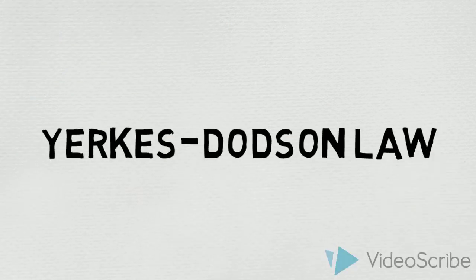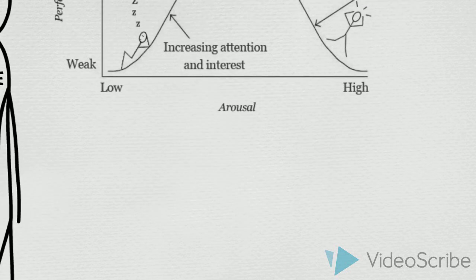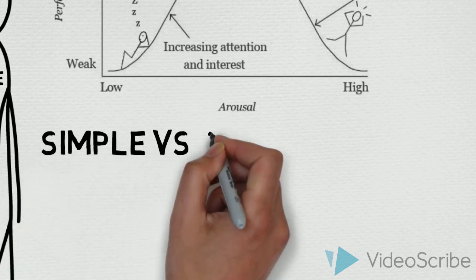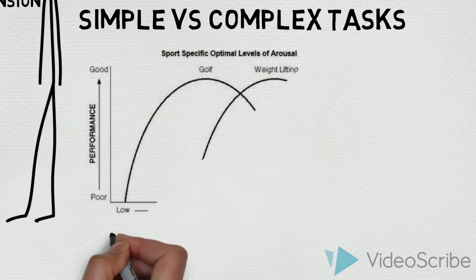The Yerkes-Dodson Law provides a clear representation of how a little amount of arousal and stress is good for performance, but if you experience too much, then your performance will start to decrease. Depending if you are doing a simple or difficult task will alter one's optimum level of arousal.